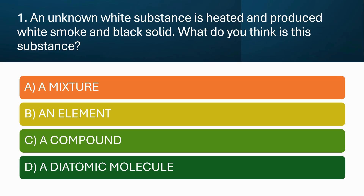An unknown white substance is heated and produced white smoke and black solid. What do you think is this substance? A. A mixture. B. An element. C. A compound. D. A diatomic molecule.